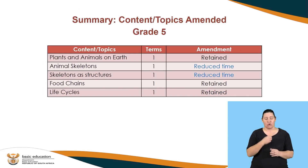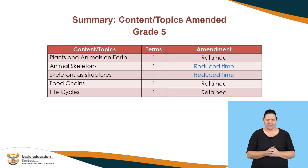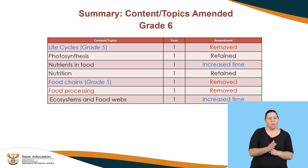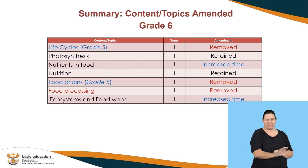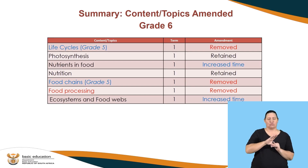In grade five, animal skeletons and skeletons and structures are the only topics with reduced time, and the rest has been retained as it is. In grade six, we removed some topics — the topics that belong to grade five are back to grade five: life cycles and food chains. Food processing originally belonged to grade six but we removed that and increased time instead in nutrients in food and ecosystems and food webs.